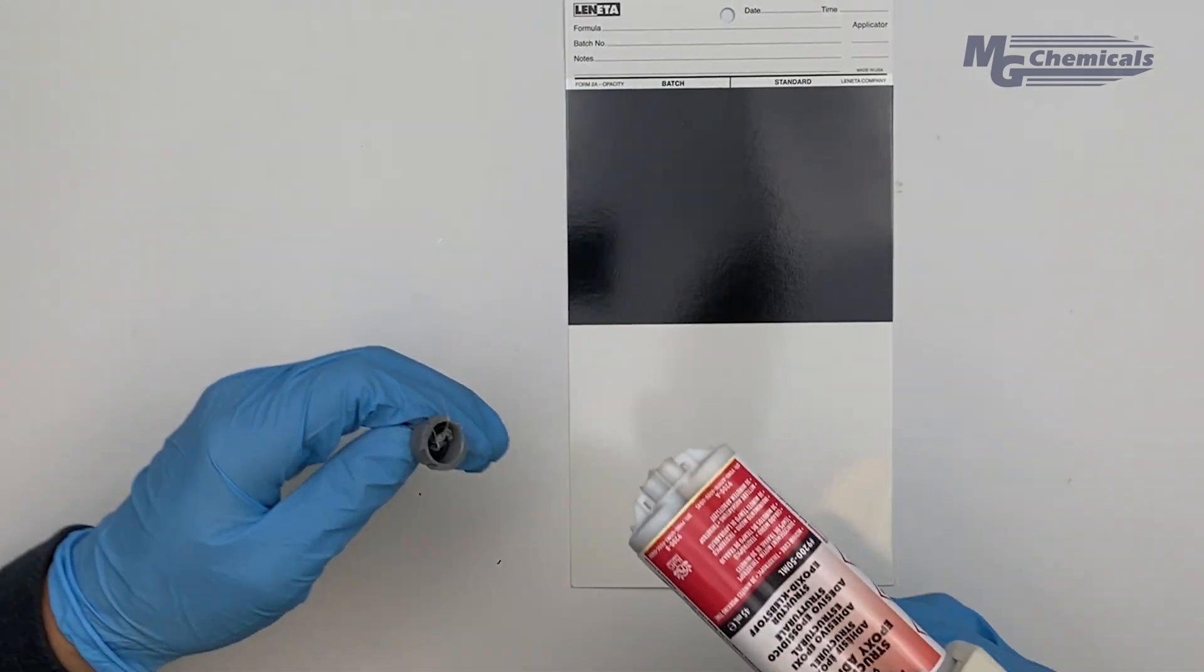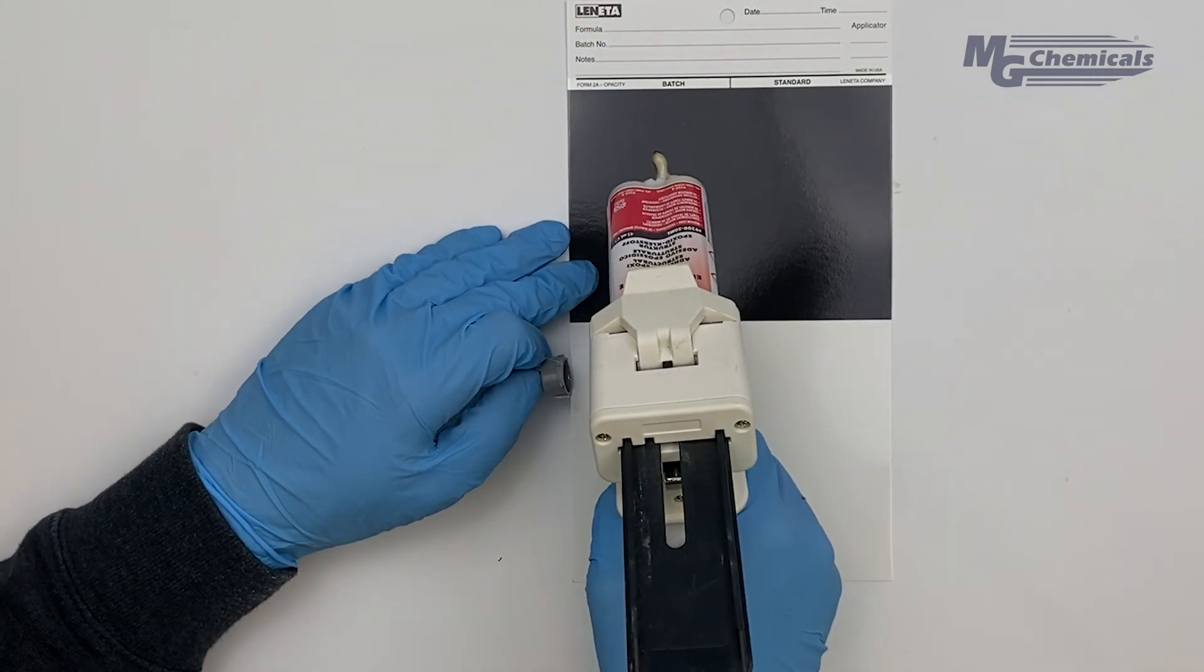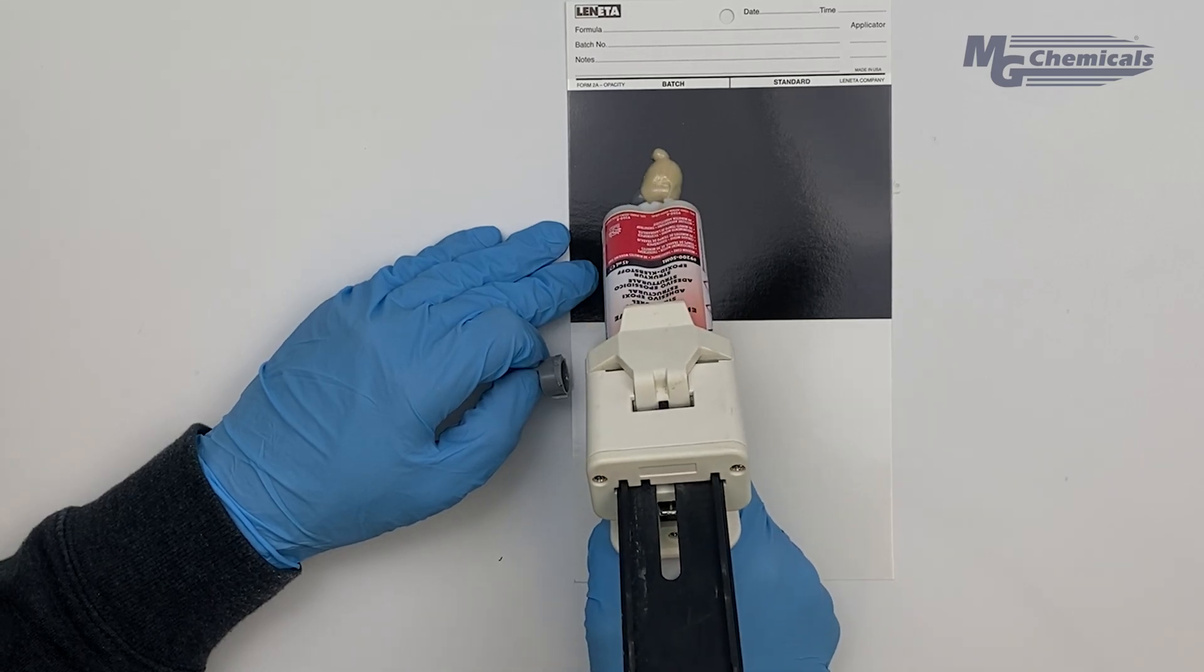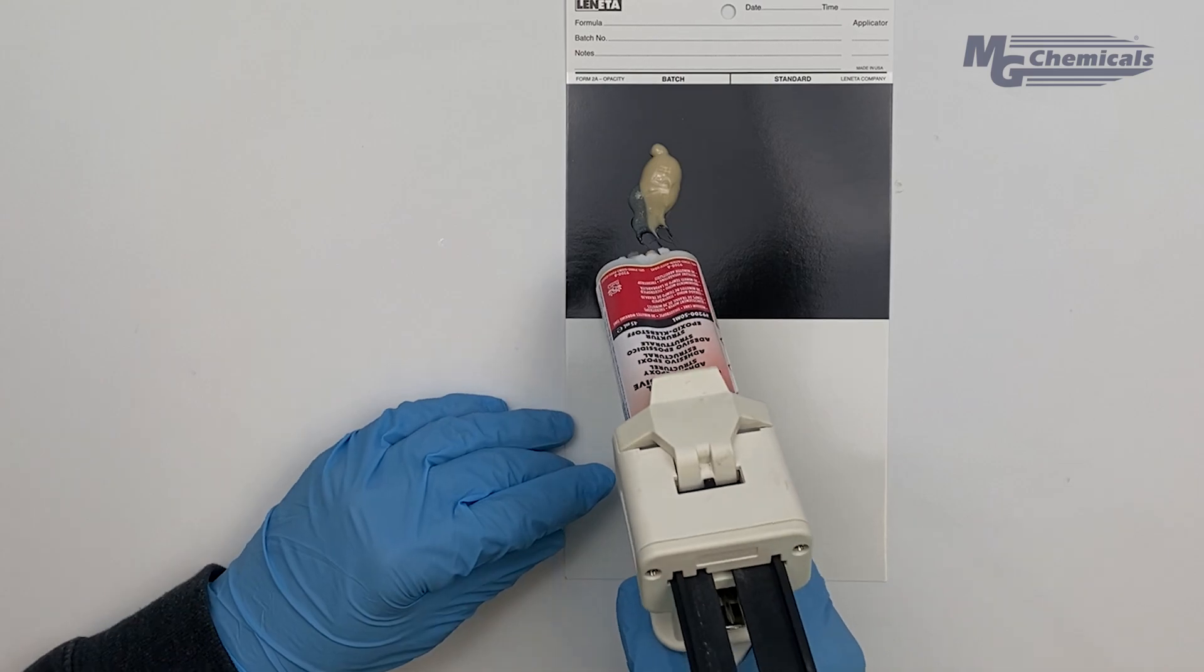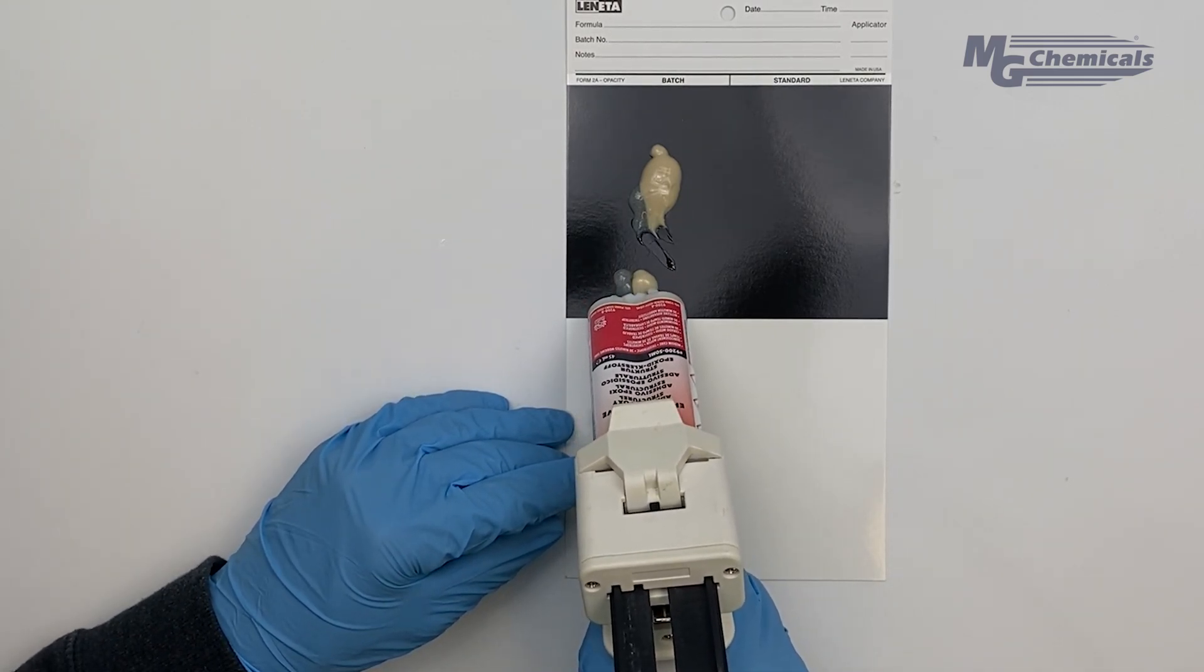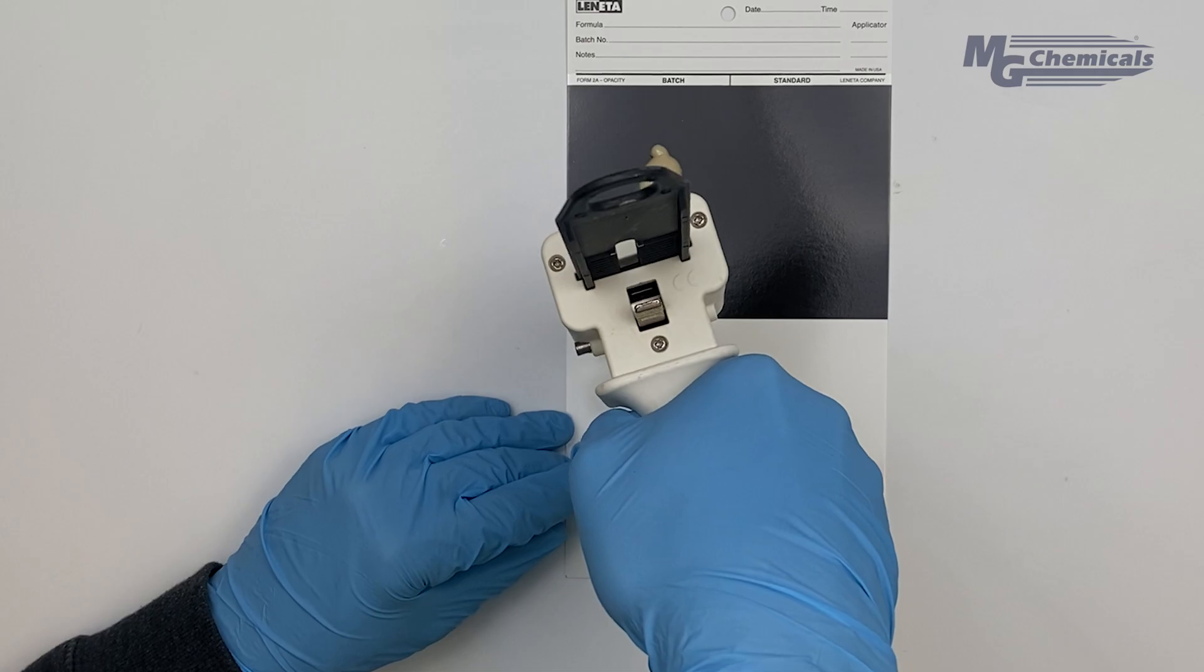Twist the cap on the tip counterclockwise to begin dispensing. Pull the trigger to dispense material from the cartridge. Take note here that uneven amounts of A and B are dispensed initially from the cartridge but once primed the cartridge dispenses the epoxy in the correct mix ratio.